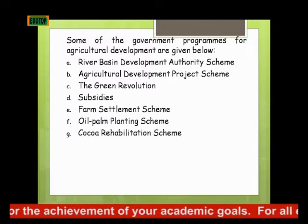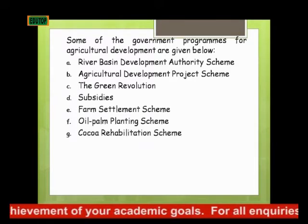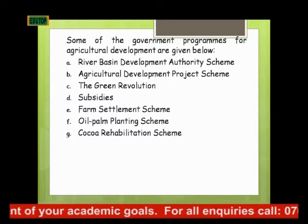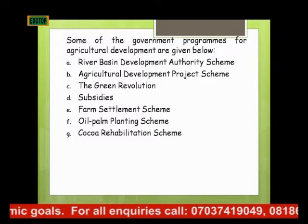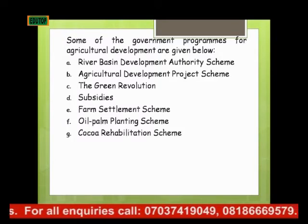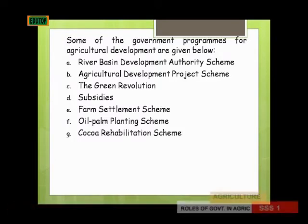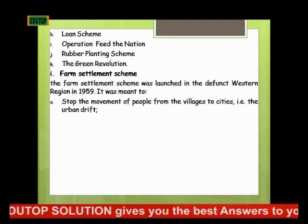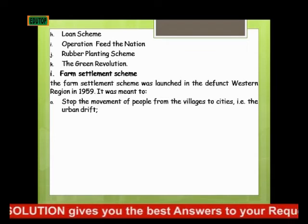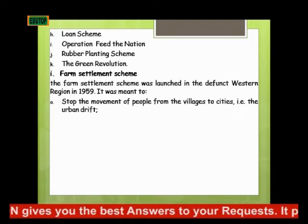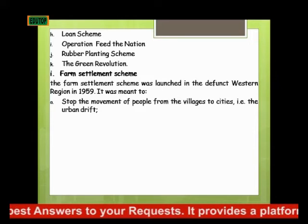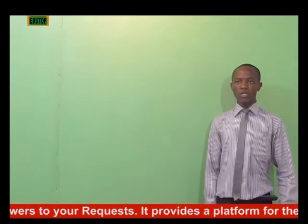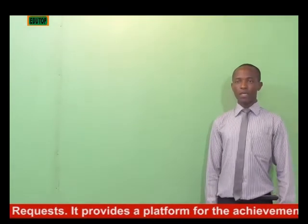Some of the government programs for agricultural development include: the River Basin Development Authority Scheme, the Agricultural Development Project Scheme, the Green Revolution, Subsidies, the Farm Settlement Scheme, the Oil Palm Planting Scheme, the Cocoa Plantation Scheme, the Loan Scheme, Operation Feed the Nation, the Rubber Planting Scheme, and the Green Revolution Scheme. The speaker notes they will explain some of these programs.